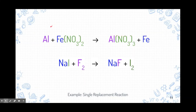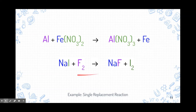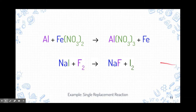Here's our first example: aluminum is our single element, and iron 2 nitrate are dancing together. Aluminum wants to replace iron because they're both metals, so aluminum goes to dance with nitrate, and iron goes by itself. Our second example is sodium iodide and fluorine. Fluorine is our single element — it doesn't matter whether the single element is listed first or last in the reactants. Fluorine is typically negatively charged, so it goes to dance with sodium, which is positively charged, and iodine goes by itself. These are each single replacement reactions.